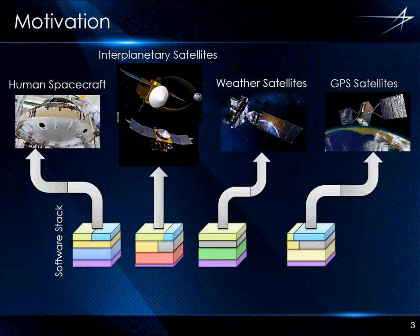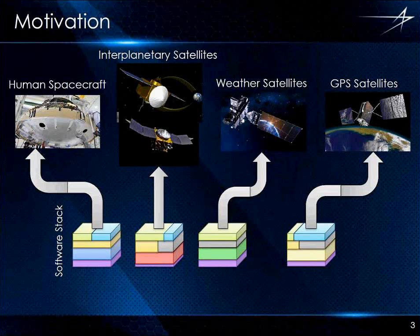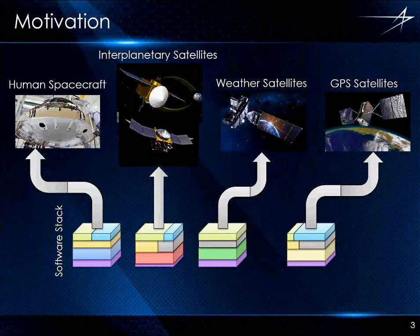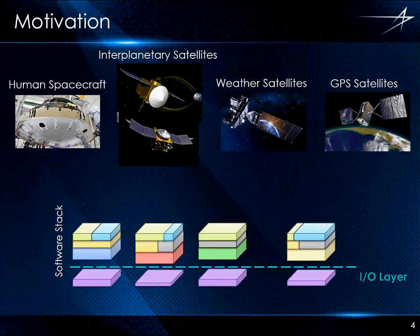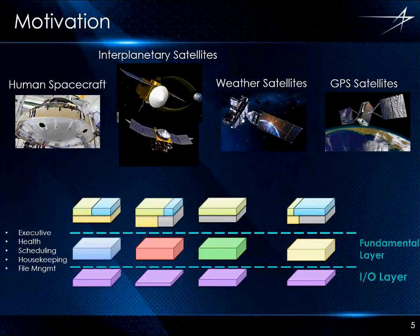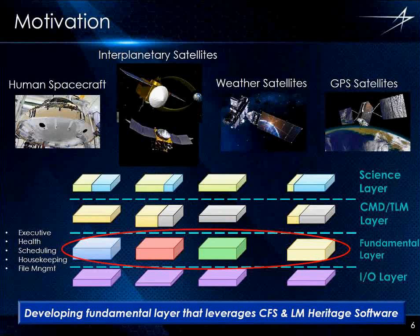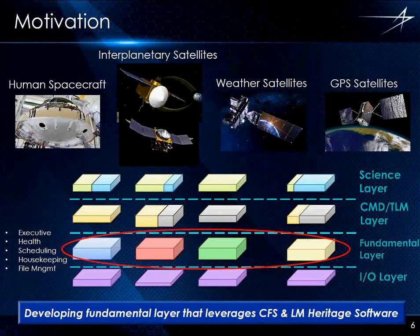The motivation for us is that Lockheed Martin is in the business of building space vehicles. We build for a wide range of missions. We have a couple of interplanetary spacecraft — OSIRIS-REx on top, and you'll recognize MAVEN. There's actually a big one-year anniversary party this weekend. We also have the GPS-3 satellite and a lot more. With all these space vehicles, we have a notional software stack that we can break apart. We have our interface layer at the bottom, and we're calling the fundamental layer 'core' — which is our executive, health and safety, scheduling, housekeeping — pretty much everything you see in the CFS core applications.